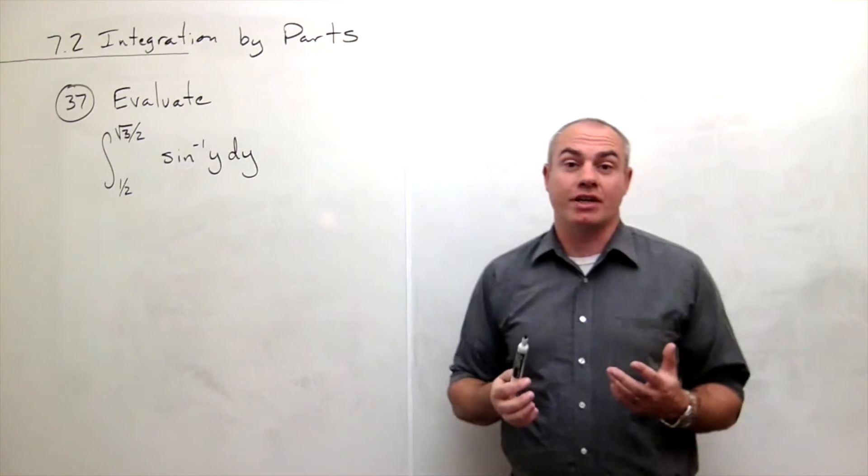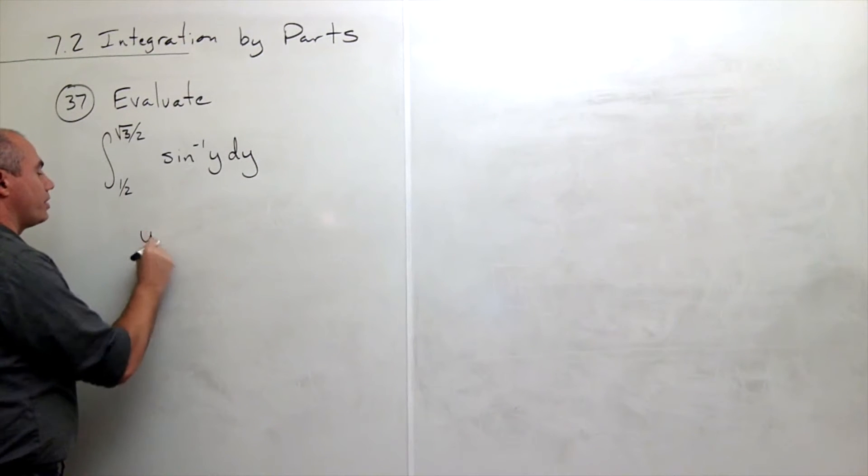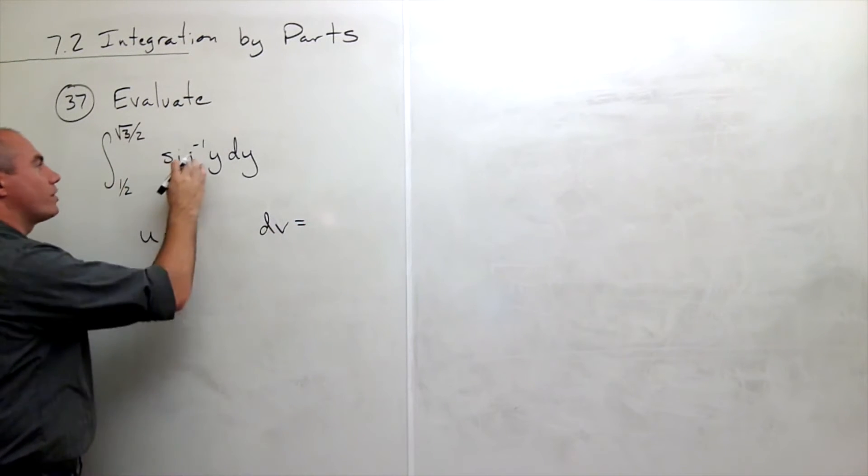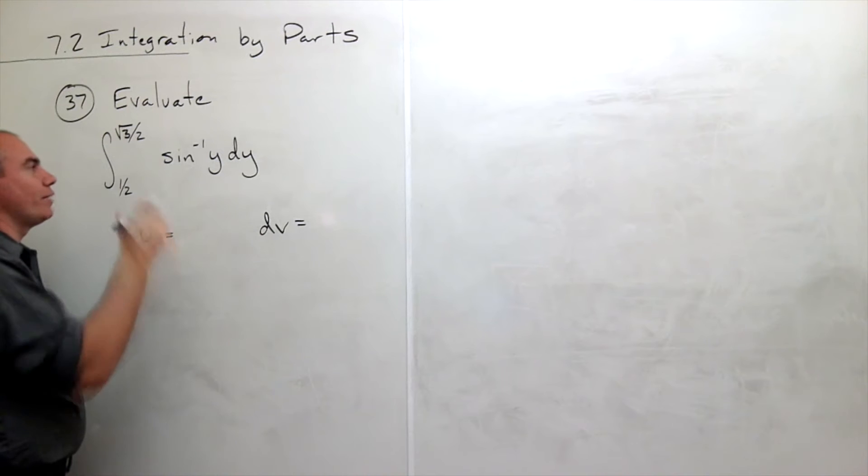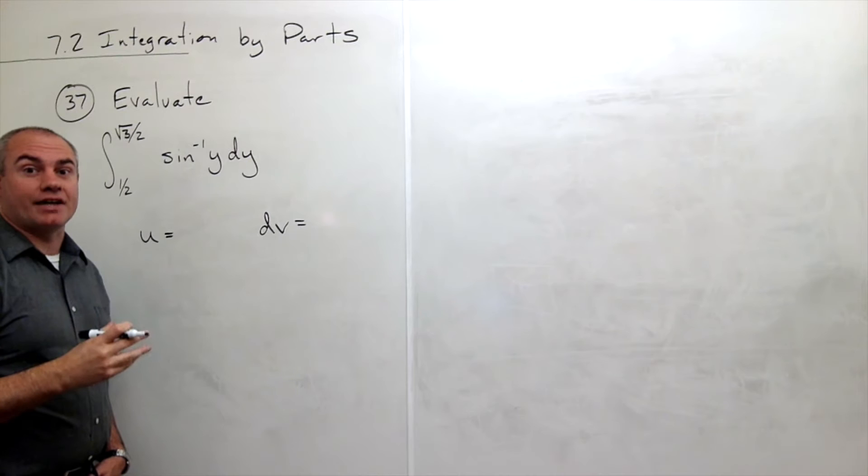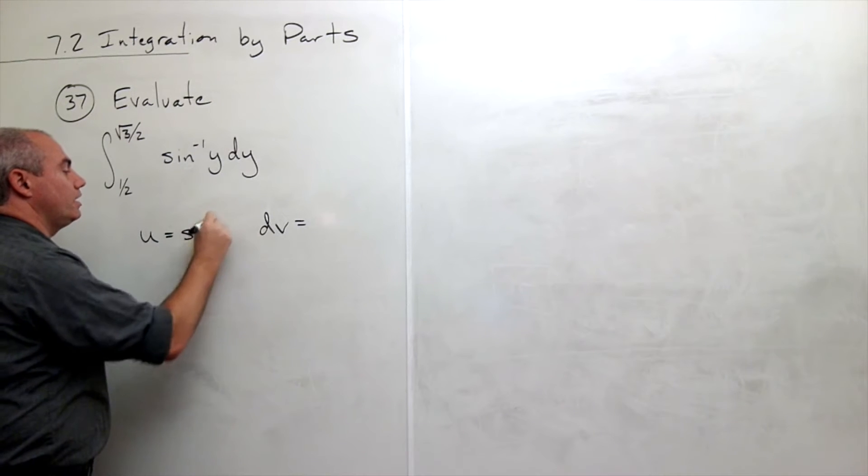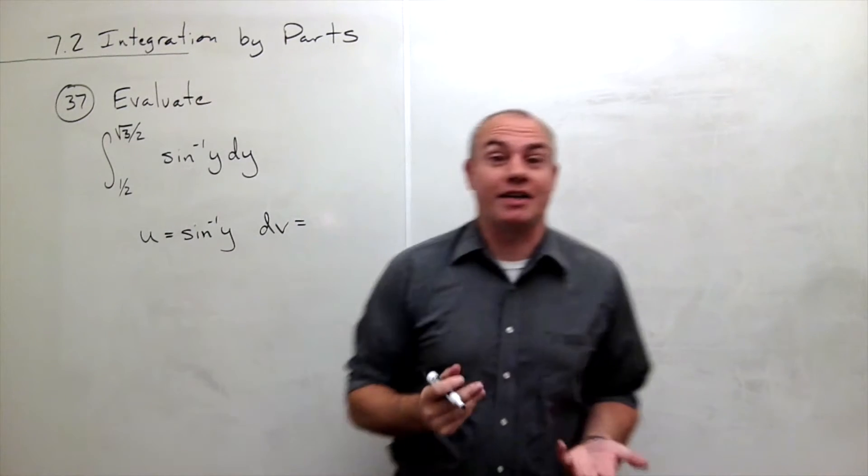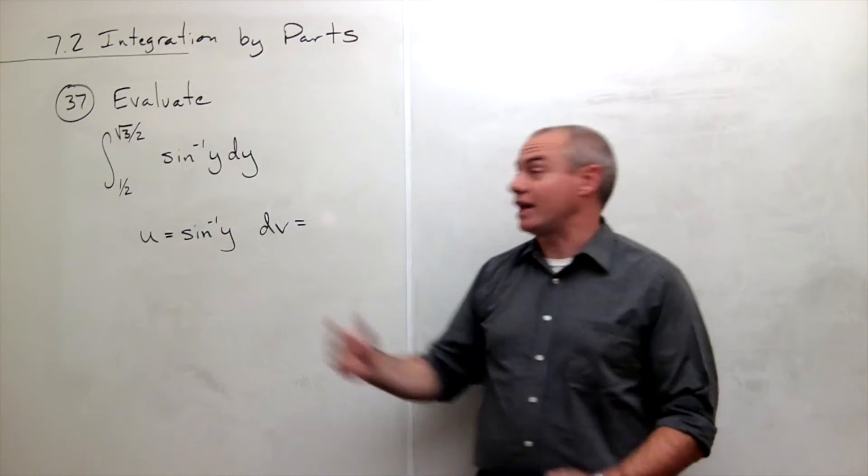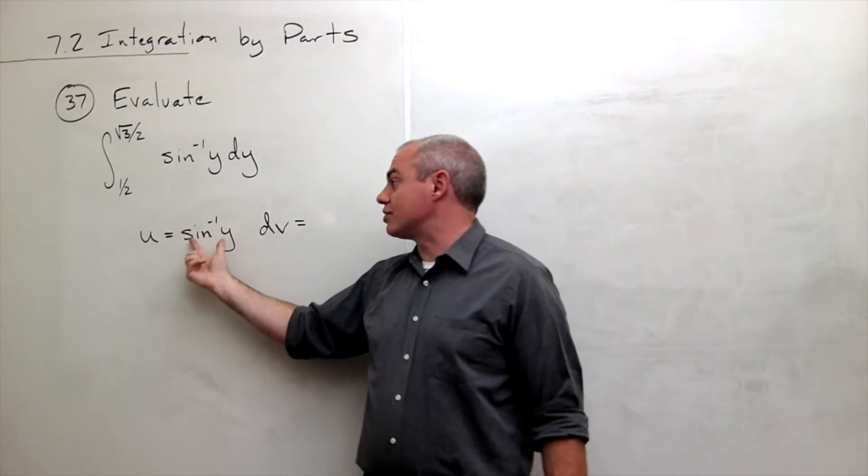I am going to use integration by parts on this guy. I have u and I have dv. And the question is for sine inverse of y, what can I do with that guy? Do I know that guy's derivative or do I know its anti-derivative? And the answer is I know the derivative of sine inverse of y. If I knew the anti-derivative of sine inverse of y, I suppose I should just take it and be done, right? So if I knew the anti-derivative, this would be a very easy problem. I don't, so I'm going to have to use its derivative to get the job done.